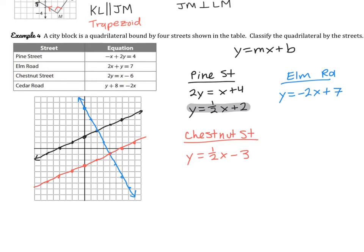For Cedar Road, subtracting 8 from each side puts it in slope-intercept form. The Y-intercept is at 0, negative 8 and the slope is negative 2. Since going down 2 over 1 from there goes off the graph, we go up 2 to the left 1 instead.